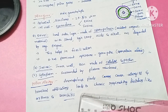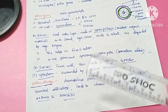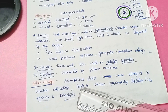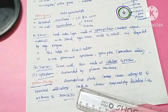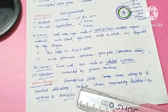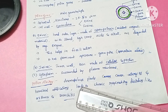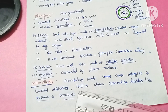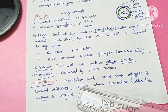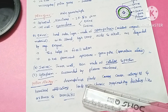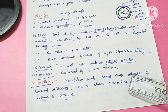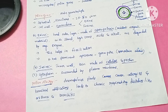Now we will see about pollen allergy. Many people are prone to pollen allergy. This is caused by anemophilous plants, which are wind-pollinated plants. Plants can be pollinated by wind, animals, insects, and water. These anemophilous plants cause severe allergies and bronchial afflictions, leading to chronic respiratory disorders like asthma and bronchitis.